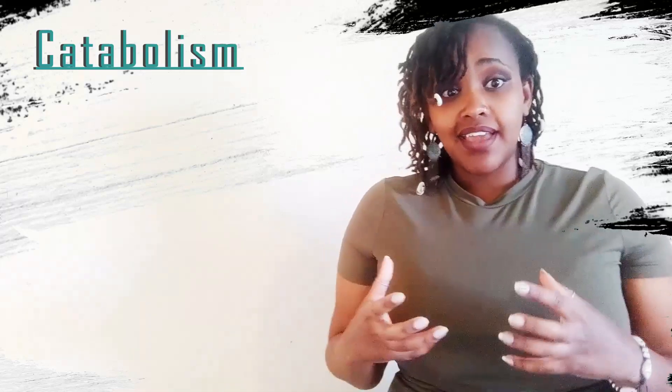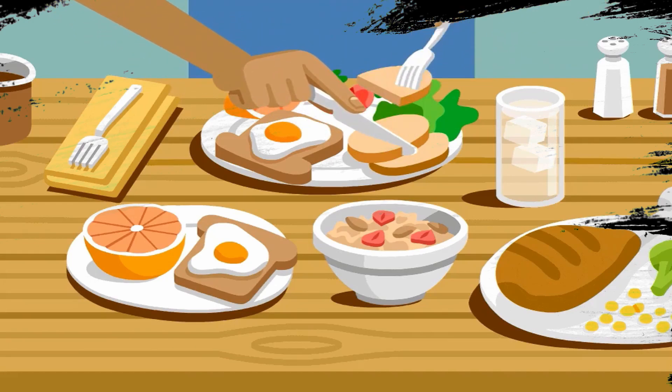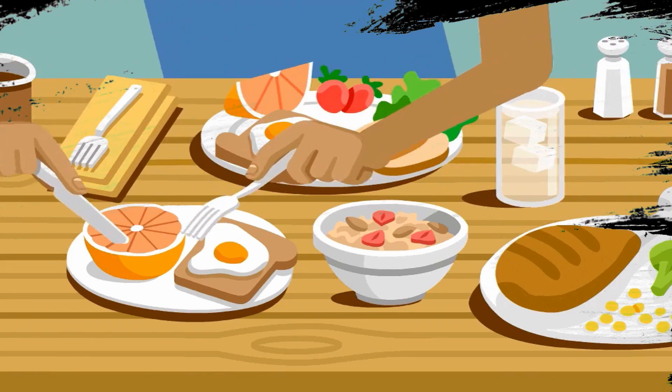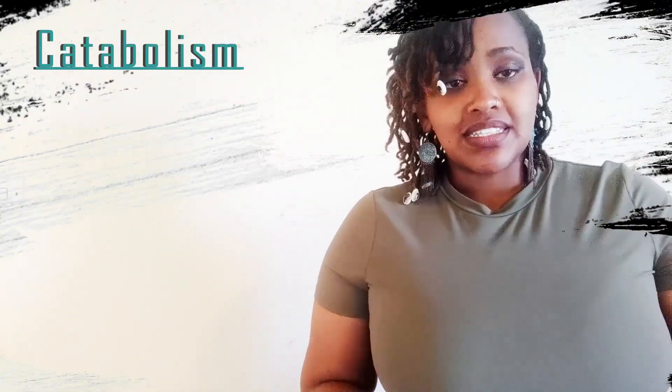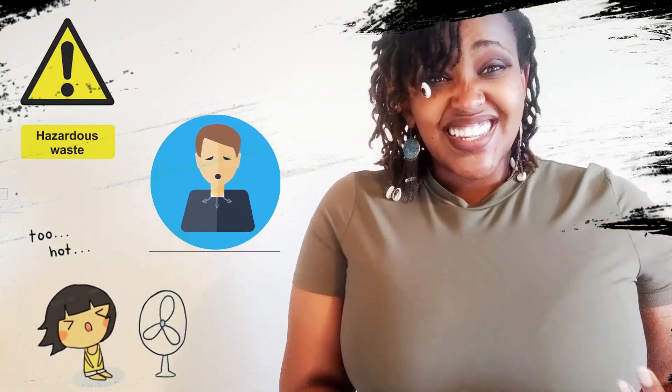Catabolism is the process where we make energy. We need nutrients from macronutrients — proteins, carbohydrates, and lipids — and micronutrients like minerals and vitamins; they are all needed to produce energy. Our body takes them in and along with oxygen, it goes through a complicated process known as the Krebs cycle. Through the Krebs cycle it breaks everything down and produces energy known as ATP. Along with this, heat is produced, carbon dioxide is produced — that's what we breathe out — and other waste products that are taken care of by the liver and kidneys.